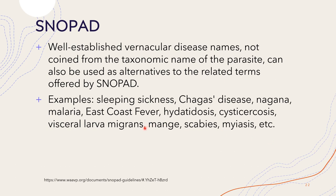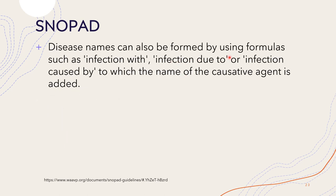Some common vernacular terms defined: mange is a type of skin disease caused by parasitic mites; myiasis is the infection of fly larvae or maggots in human tissue; malaria is a life-threatening disease caused by parasites transmitted through the bites of infected female Anopheles mosquitoes. Disease names can also be formed using formulas such as 'infection with,' 'infection due to,' or 'infection caused by,' followed by the name of the causative agent — for example, infection caused by Echinococcus granulosus.